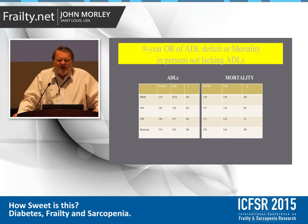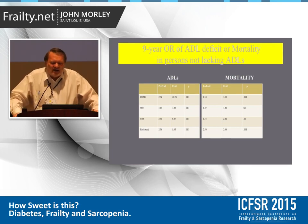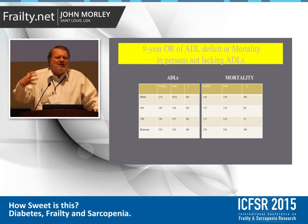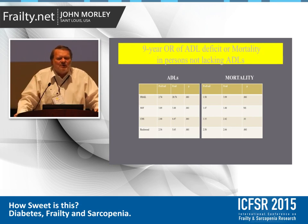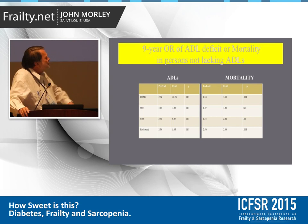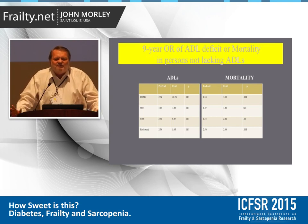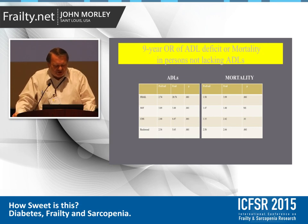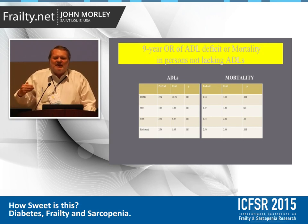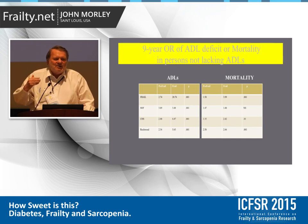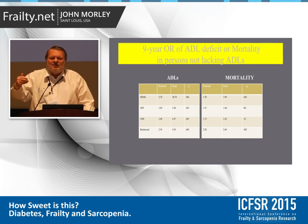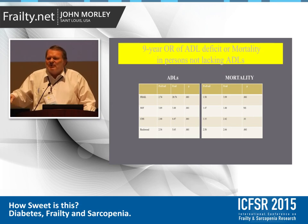About two years ago, Ted and I took ADLs out of the frailty definition. What we showed is that if you compare all definitions — fundamentally the physical phenotype — the FRAIL scale works about as well as the physical phenotype, excluding ADLs. You have to exclude ADLs because the whole idea of frailty is that it is the precursor of ADLs.